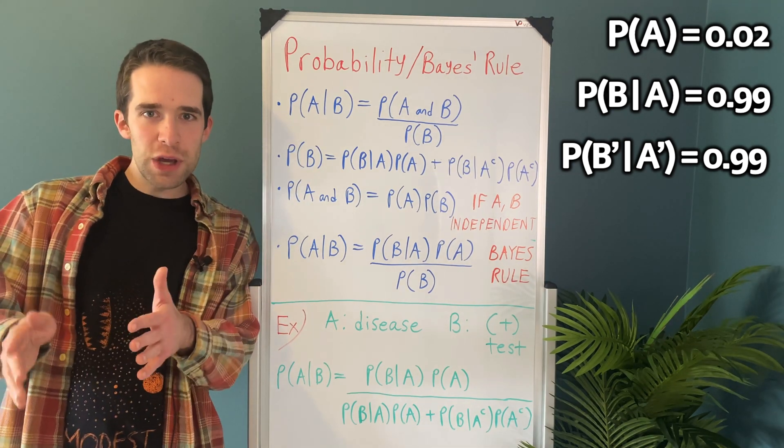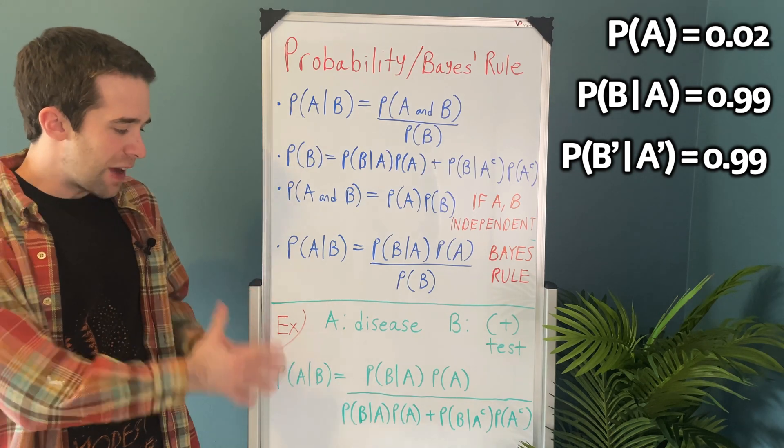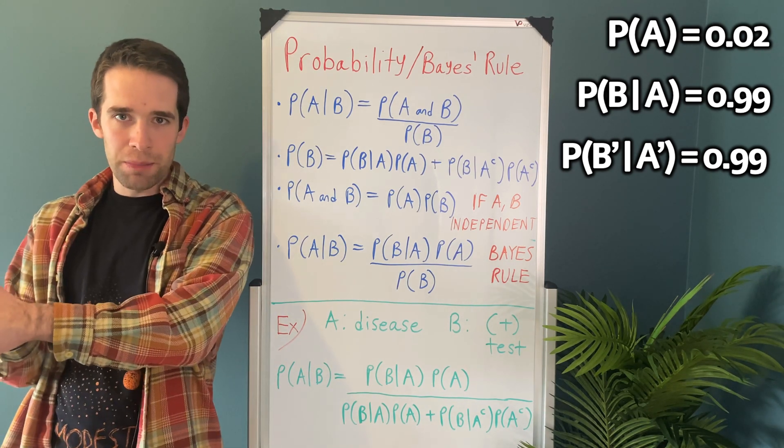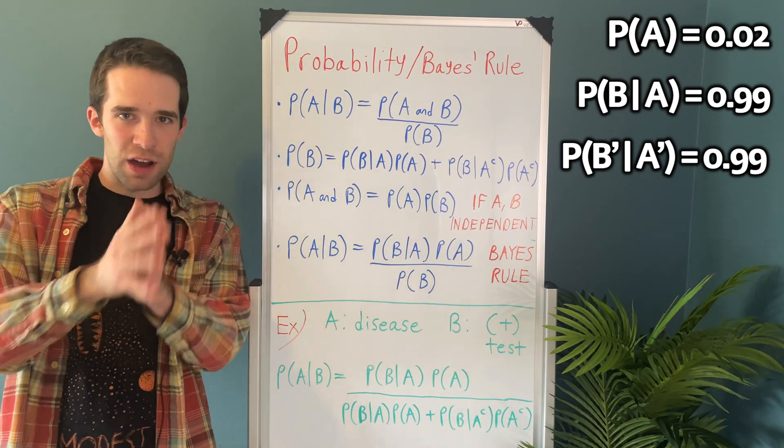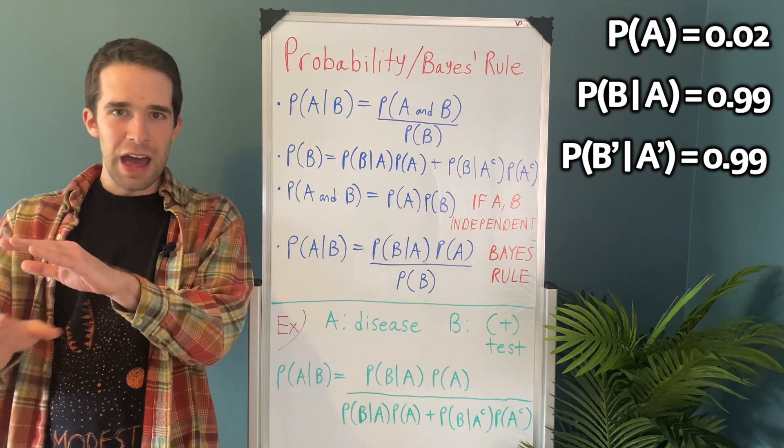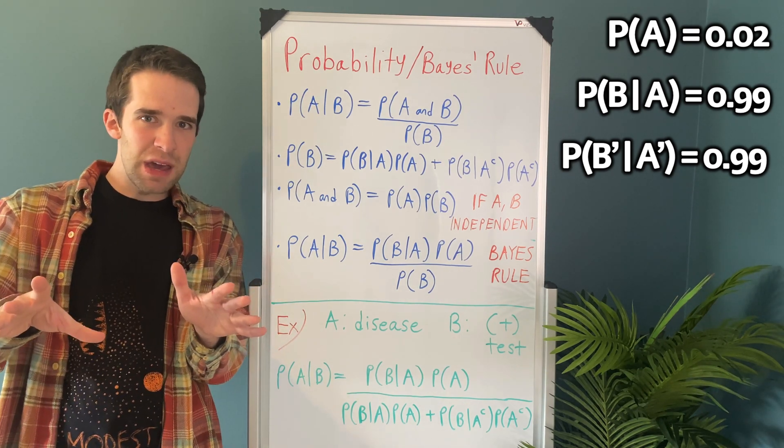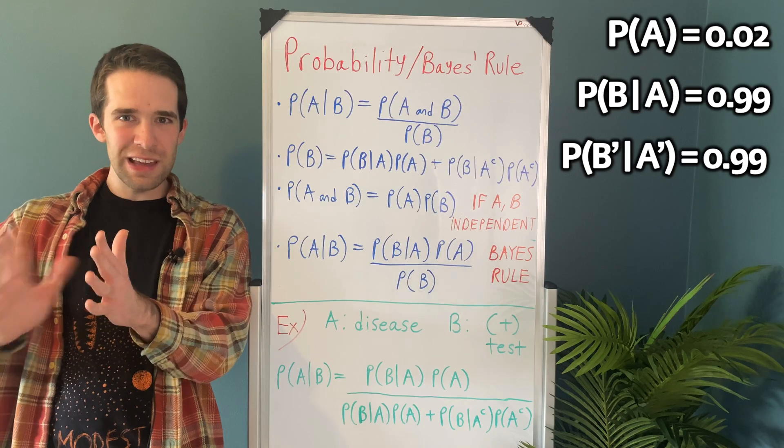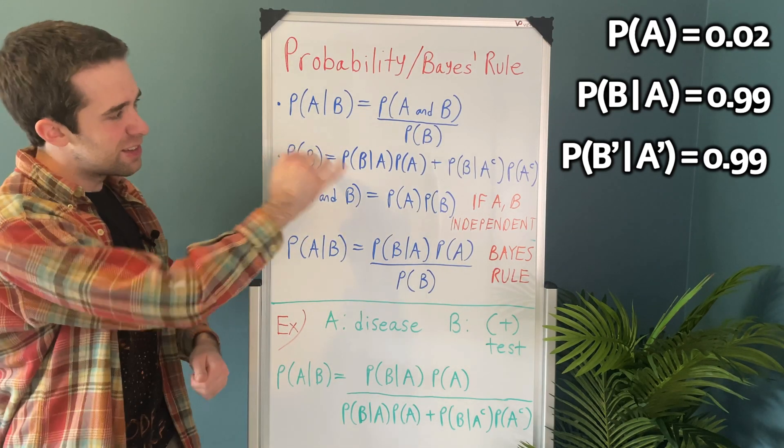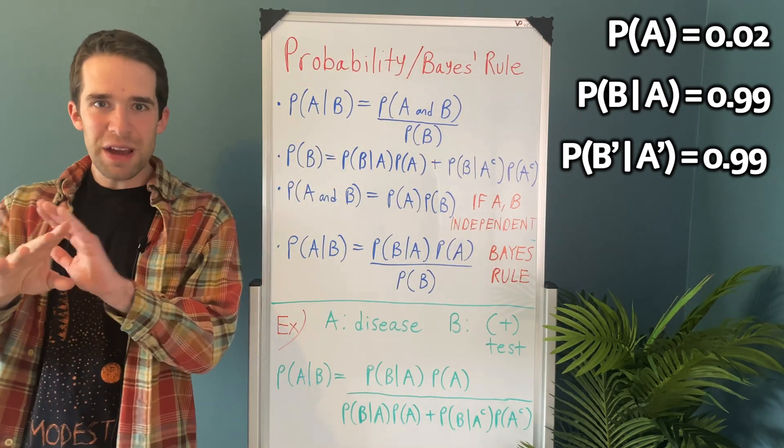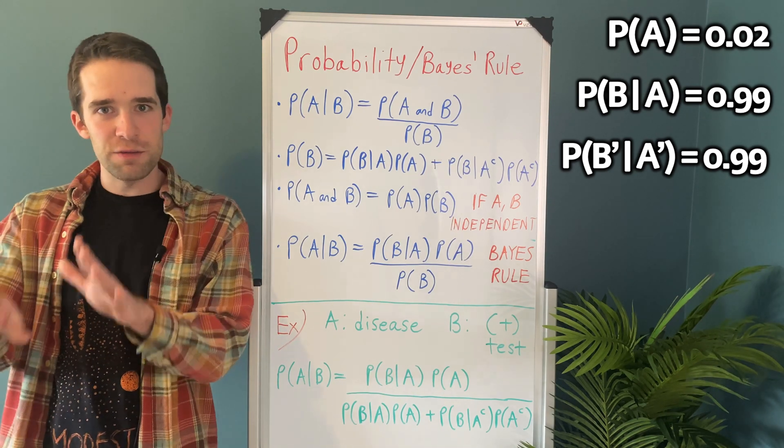All we have to do here is use Bayes' rule. So we have the probability of A given B equals the probability of B given A times the probability of A. That's over the probability of B, which we're not given directly here, but we can solve for that using this extended form, because we're basically given all the rest of this information.